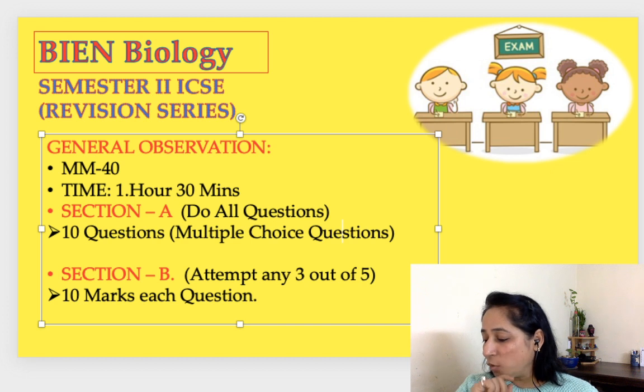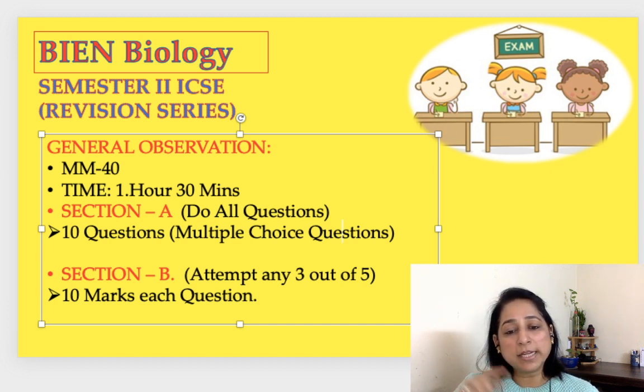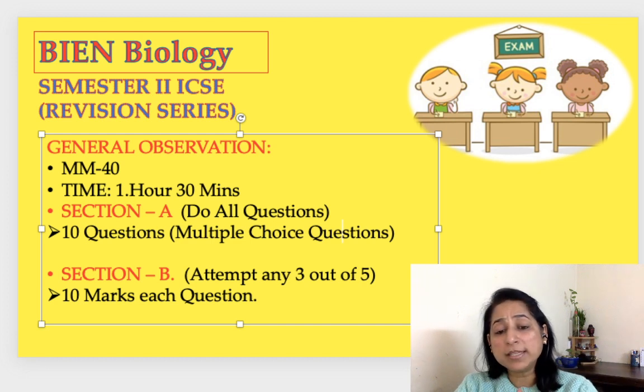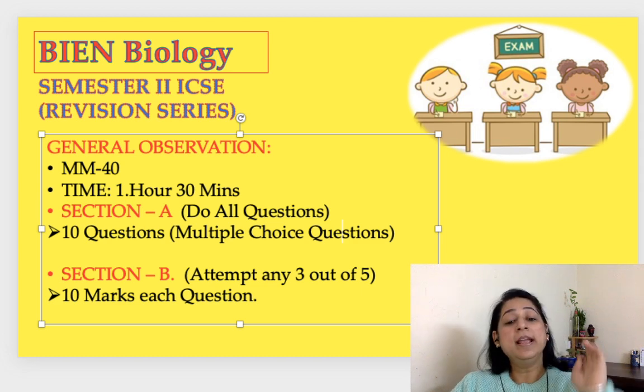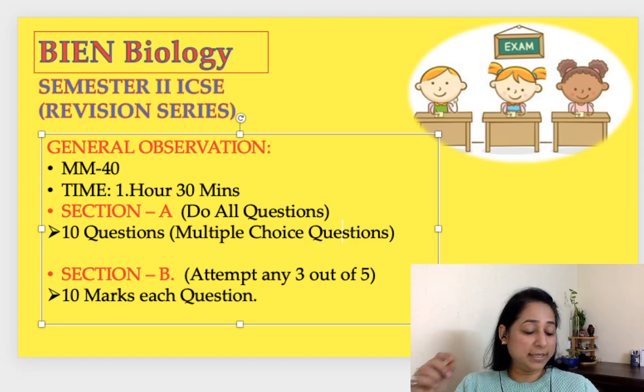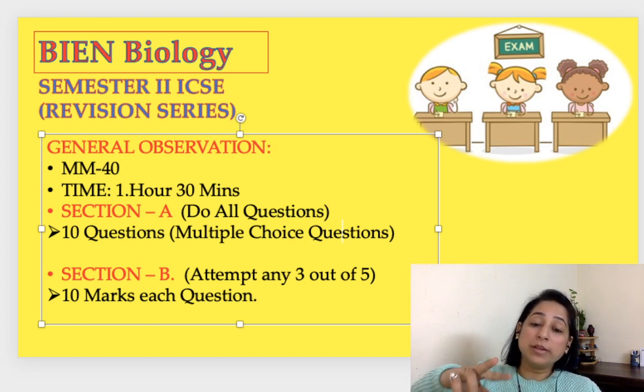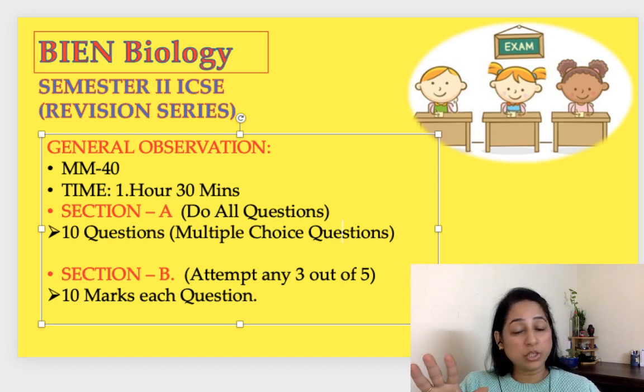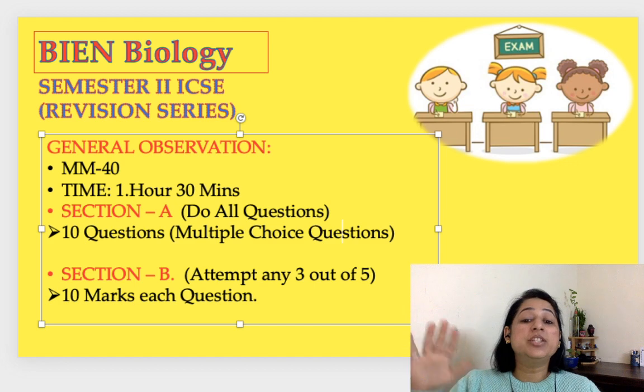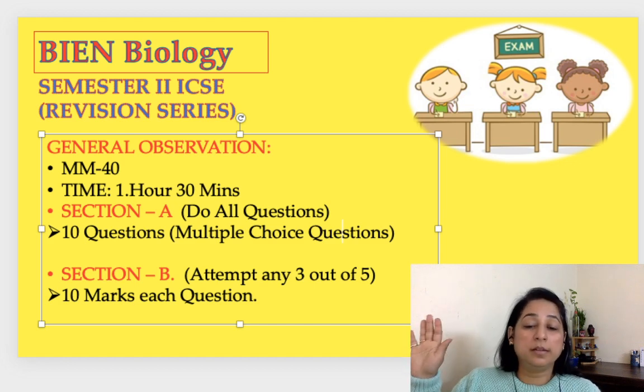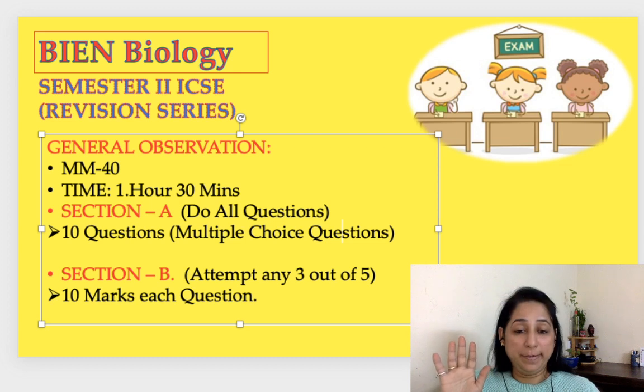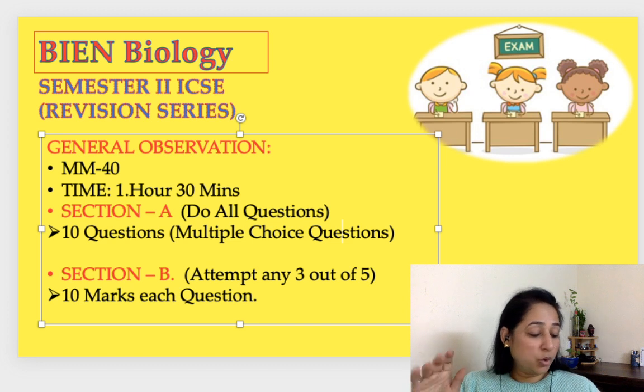When I was going through the questions given in section B, what I could understand is that in each question they had given two questions from one chapter and then two questions from two different chapters. There are only four chapters so they have given each and every chapter's question.